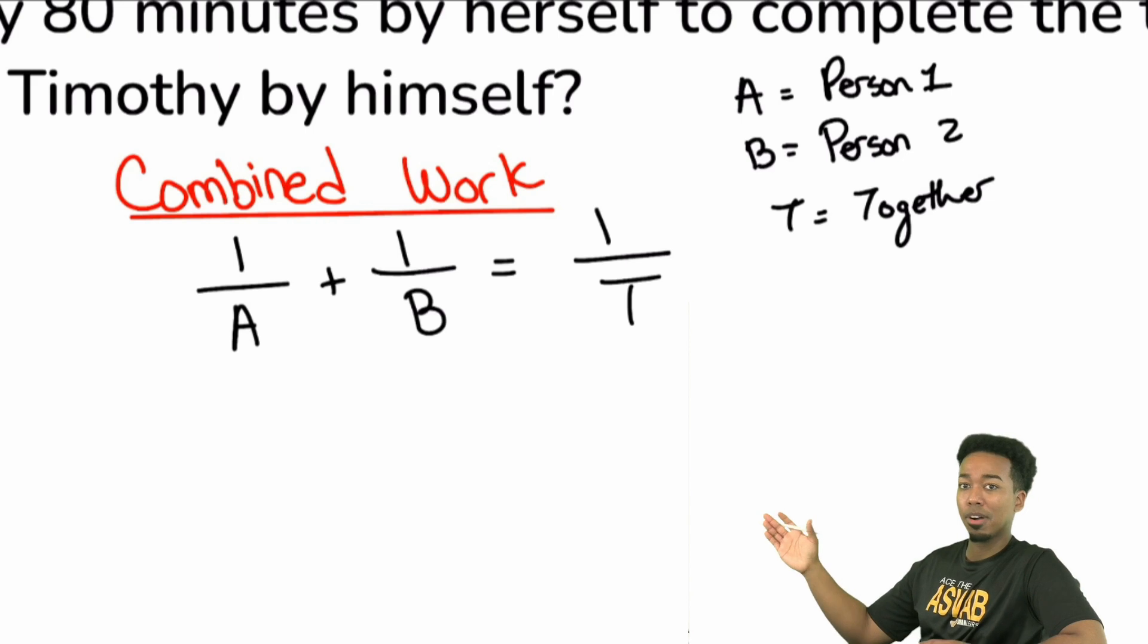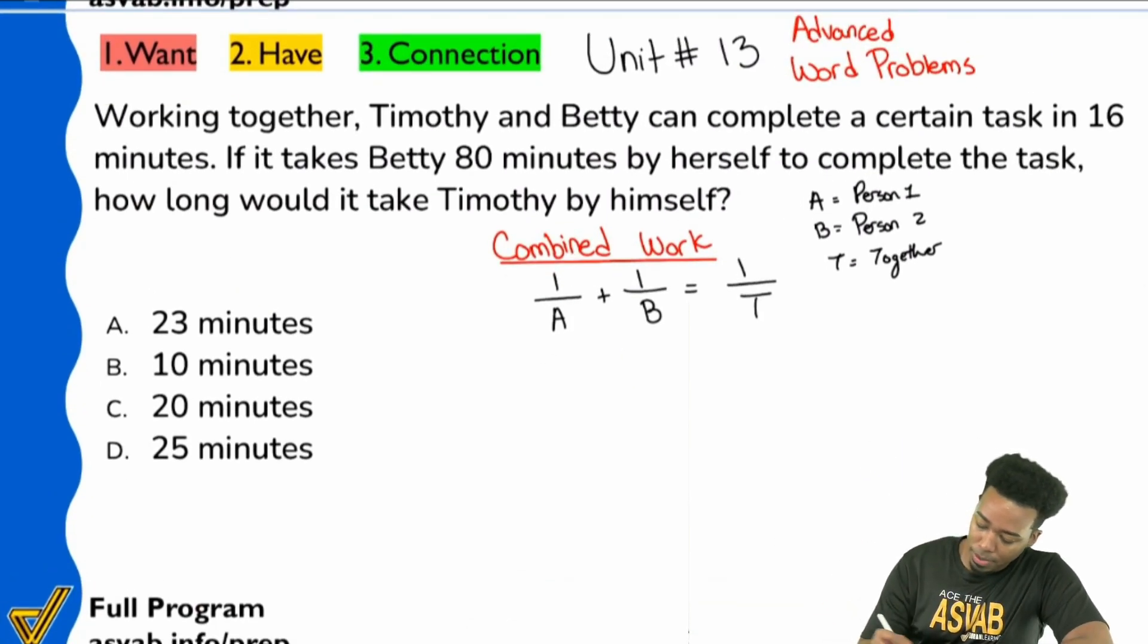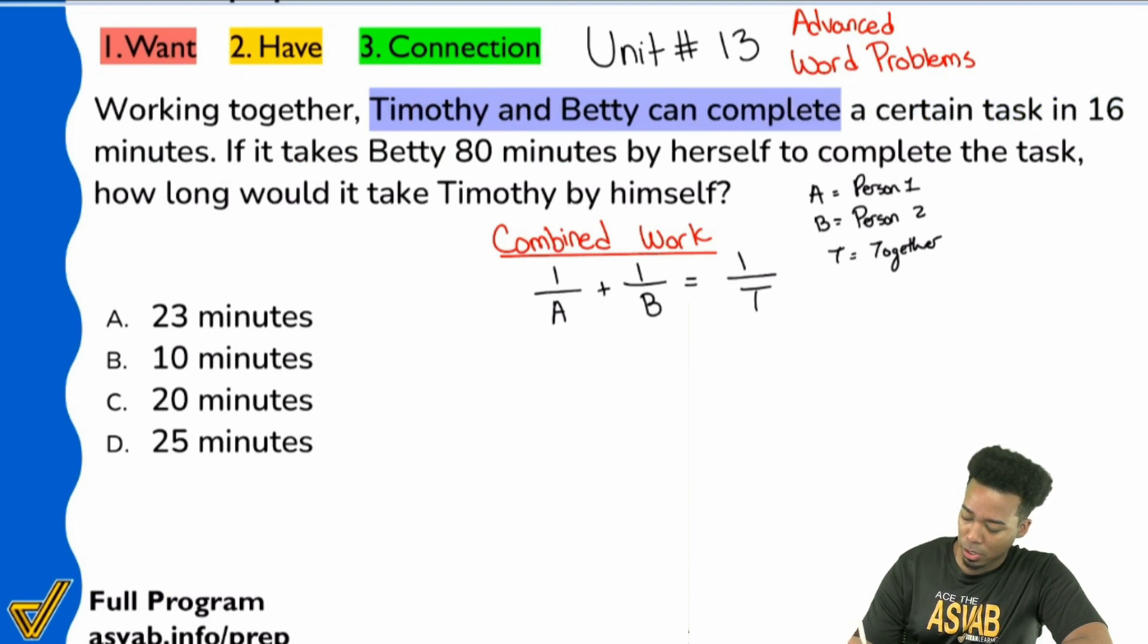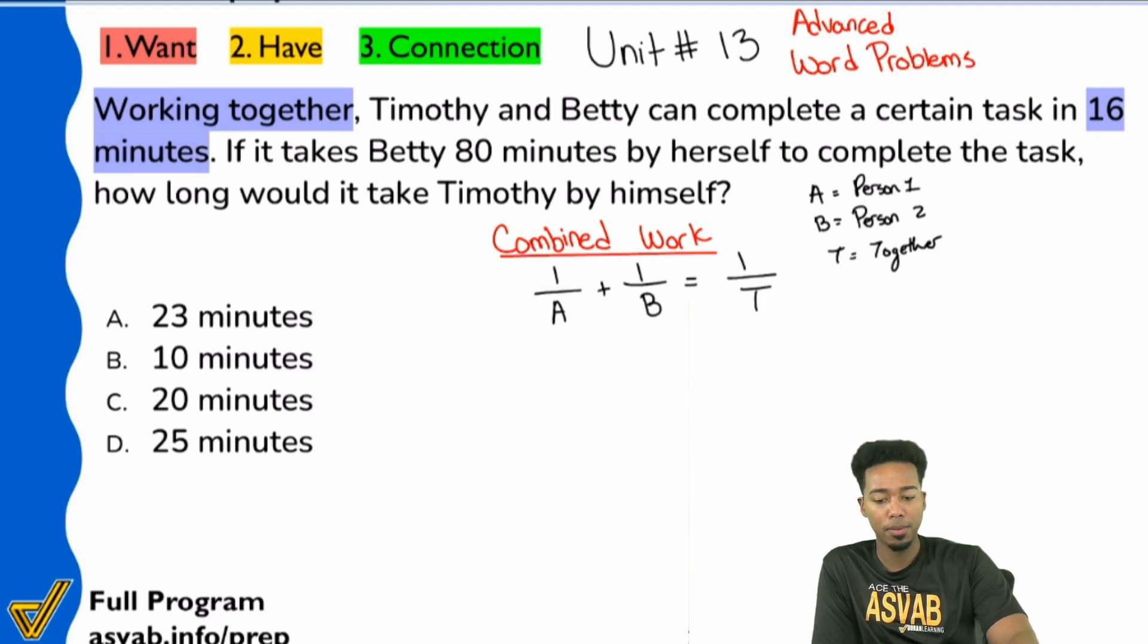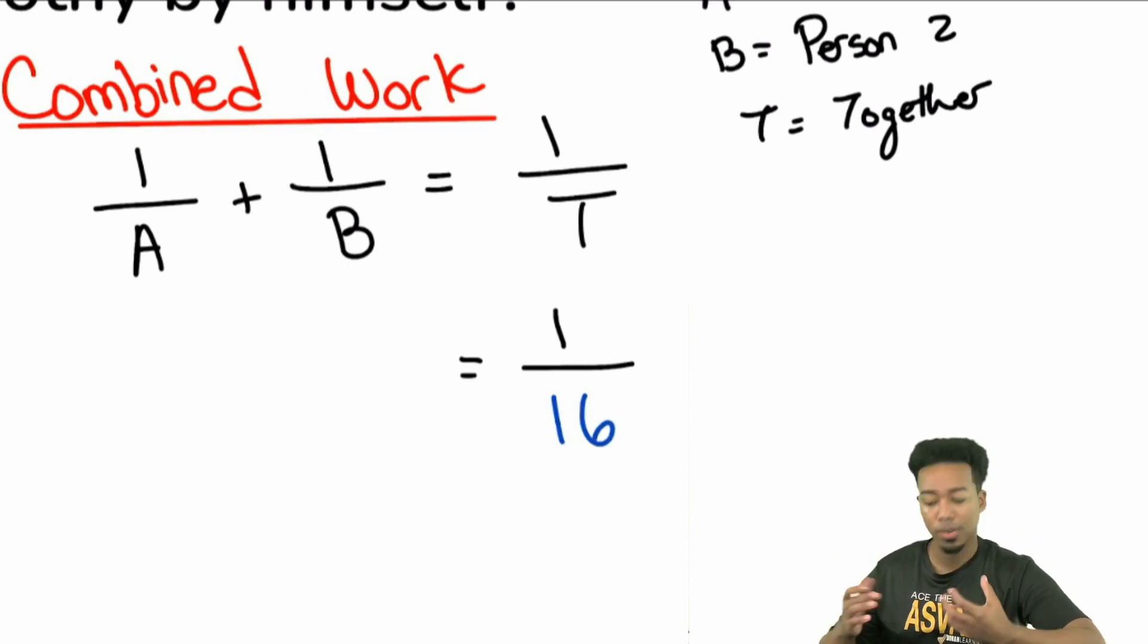The nastiest part is the setup. Once you get past that, chilling. But either way this is still a top 1% problem. Working together, Timothy and Betty can complete a certain task in 16 minutes. If we're looking at our formula, where do you think this will belong? Timothy and Betty can complete a certain task in 16 minutes if they're working together. Where would that belong? Right, that's the value for T. That's the amount of time it takes them working together. 16 would be it right there.